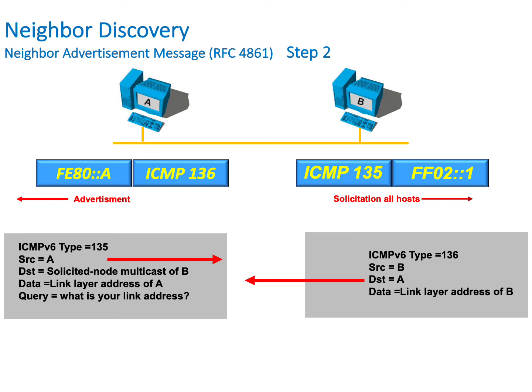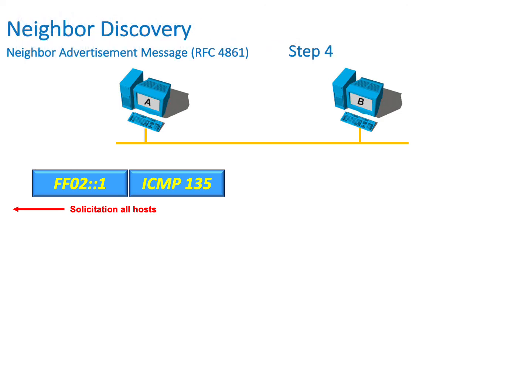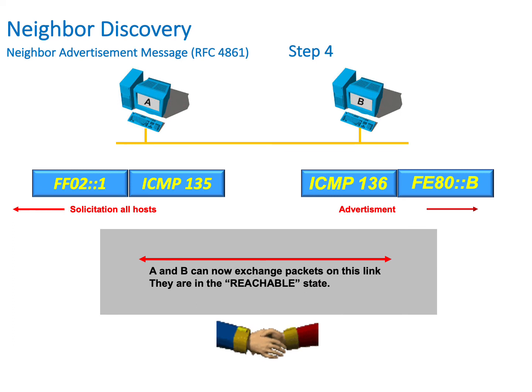Now it is the turn of host B. Host B will send out a multicast neighbor solicitation message to all hosts with an ICMP value of 135. Host A responds to the link local address of host B with a neighbor advertisement message having an ICMP value of 136. A and B can now exchange packets and are in a reachable state.